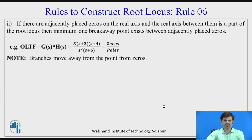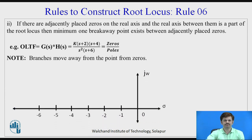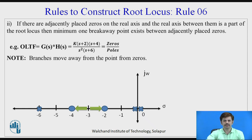Second, if there are adjacently placed zeros on the real axis and the real axis between them is a part of root locus, then minimum one breakaway point exists between the adjacently placed zeros. For this, the open loop transfer function is K(s+2)(s+4) divided by s²(s+6). Plotting the roots on the s-plane, we have two roots at origin, one at minus two, one at minus four, and one at minus six. There are two adjacently placed zeros at minus two and minus four with root locus in between, so minimum one breakaway point exists there. Note that the branch always moves from the point towards the zeros.